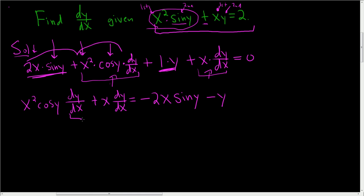To finish, we're going to factor out dy/dx, and divide, and we'll be done. So, dy/dx. Here you end up with x squared cosine y plus x. And on the right-hand side, it looks like we have this stuff here. So, negative 2x sine y minus y.